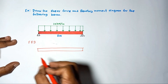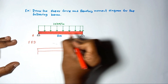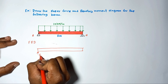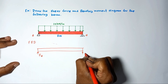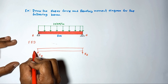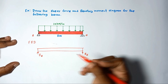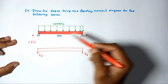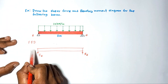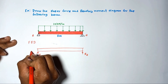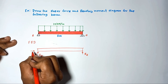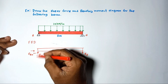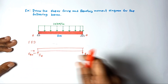We have to find the support reactions. Let's take this point as A and this point as B, with reactions R_A and R_B. There are no horizontal forces, so there is no reaction force in the horizontal direction — R_A horizontal is equal to zero. Only the vertical reaction exists.